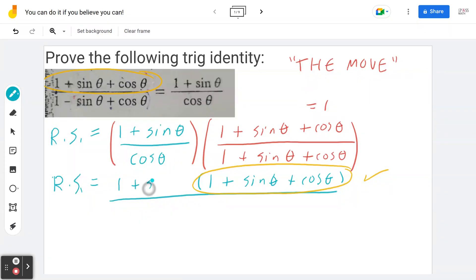On the other hand I do copy 1 plus sin theta. If you look at the denominator you can expand this. Cosine theta times 1 is cosine theta. Cosine theta times sin theta is going to be cosine theta times sin theta. And of course cosine theta times cosine theta is cosine theta square.